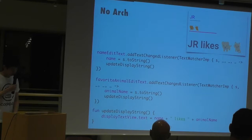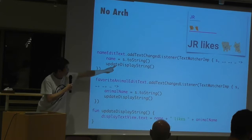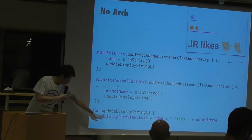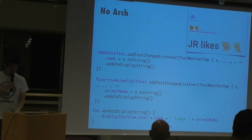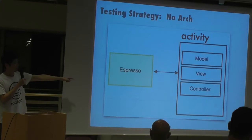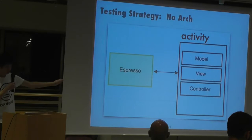It's pretty simple. The name edit text has a listener: when you key in something, I store it as the name and call update, because I want every keystroke to trigger an update. Same for the animal. This is the method which updates the string. As for testing strategy: as I mentioned, you can only call it from outside, because everything is bundled together. You call it from outside and check what the output is.